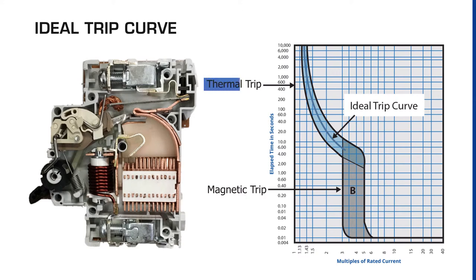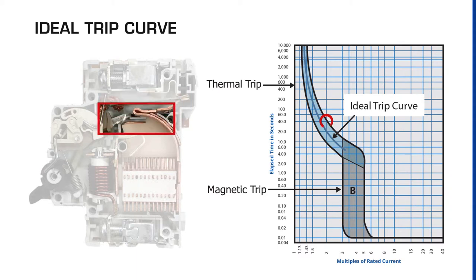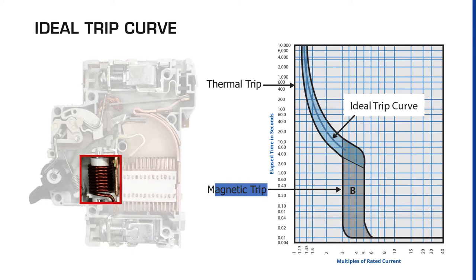The top of the chart shows the thermal trip curve for the bimetallic strip. It tells us that at one and a half times the rated current, the quickest the circuit breaker will trip is forty seconds, and forty seconds at two times the rated current is the slowest the circuit breaker will trip. The bottom of the chart is for the magnetic trip of the coil or solenoid. At 0.02 to 2.5 seconds at three times the rated current, that's the soonest the circuit breaker is going to trip. The same duration, 0.02 to 2.5 seconds, at five times the rated current is the longest it will take the circuit breaker to trip.